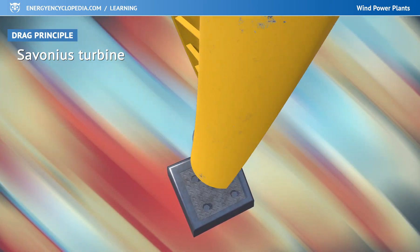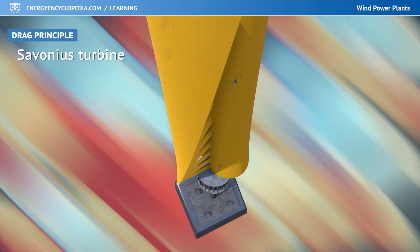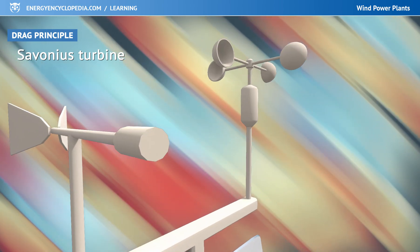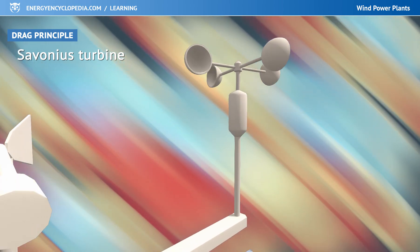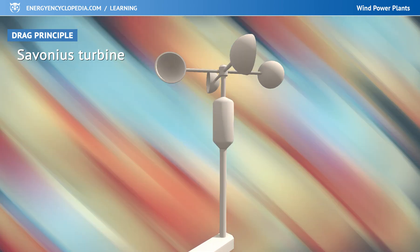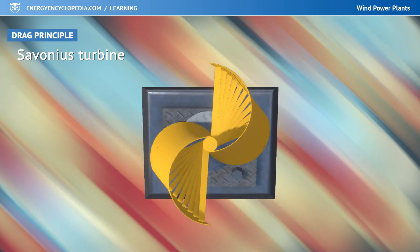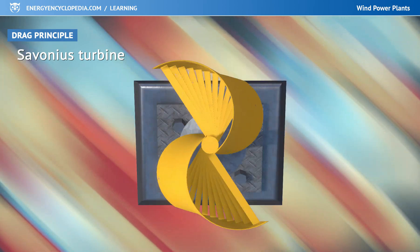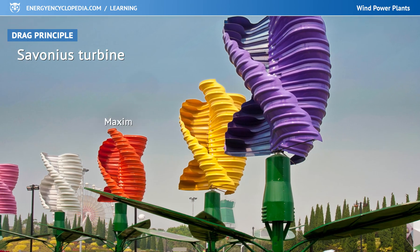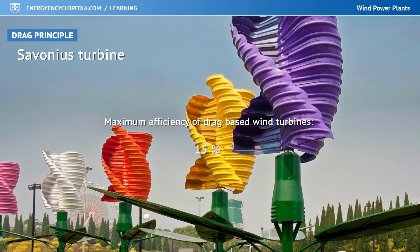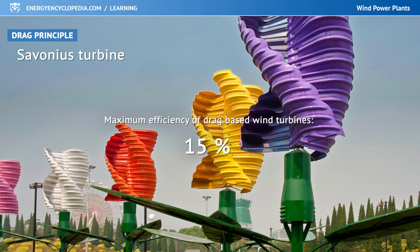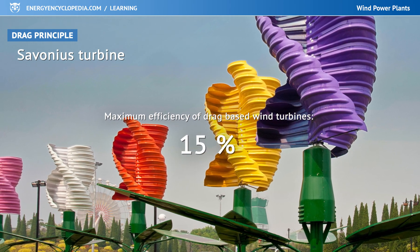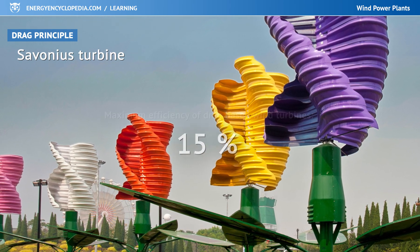The wind is always pushing on one of its semicircular parts, which makes the whole system spin. It is used in roof vents or as an anemometer. However, drag-based wind turbines are not very suitable for electricity generation, because their maximum efficiency is only around 15%.